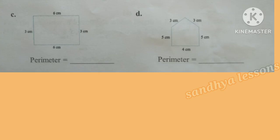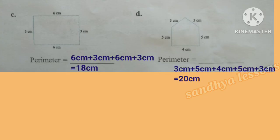C is a rectangle with length 6 cm and breadth 3 cm. Perimeter equals the sum of sides: 6 cm plus 3 cm plus 6 cm plus 3 cm, which equals 18 cm. Perimeter of the given rectangle is 18 cm. D is a pentagon with sides 3 cm, 5 cm, and 4 cm. Therefore, perimeter equals 3 cm plus 5 cm plus 4 cm plus 5 cm plus 3 cm, which equals 20 cm.